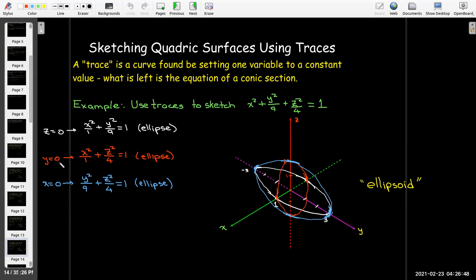Now I only chose z equals 0, y equals 0, and x equals 0. But in fact, if I had chosen a different value for z, I would still get another ellipse. But I'm not going to try to attempt to draw them. We'll see later on where I've used some technology, the other ellipses.